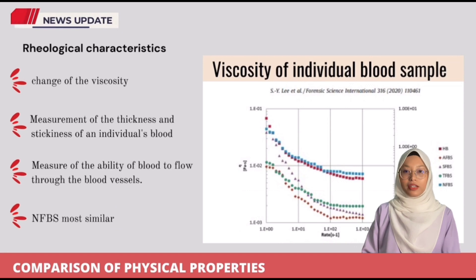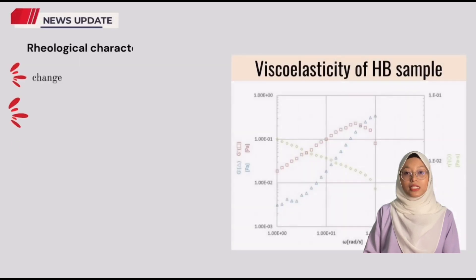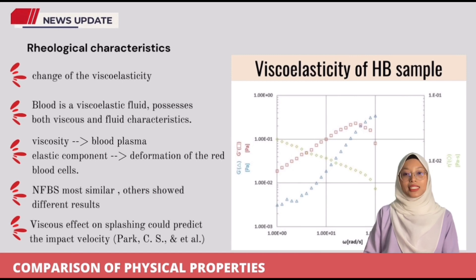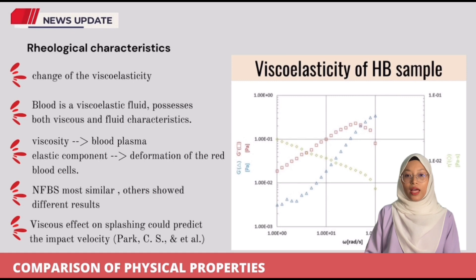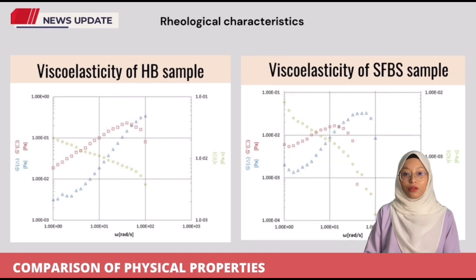The first rheological characteristic measured is viscosity — the measurement of the thickness and stickiness of blood. The data shows that the viscosity of NFBS is most similar to human blood compared to the other blood substitutes. Blood is a viscoelastic fluid, possessing both viscous and elastic characteristics. The viscous component is largely caused by blood plasma, while the elastic component is caused by red blood cell deformation. The results show that the viscoelasticity of the NFBS had a more similar tendency to human blood, and this viscous effect can help predict the impact velocity that plays an important role in blood pattern analysis.